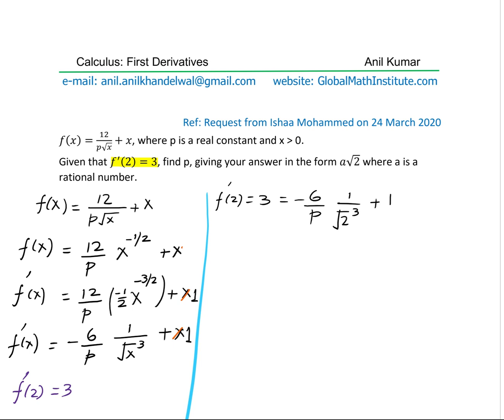2 cube is 8. So let us write down here minus 6 over p times 1 over 2 square root 2. 8 is 2 times 4 plus 1. Now let us simplify taking 1 to the left side. We get 3 minus 1 equals 2. We can cross out these. It goes 3 times. So you get minus 3 over square root 2 times 2 times 1 over p, which is 2.